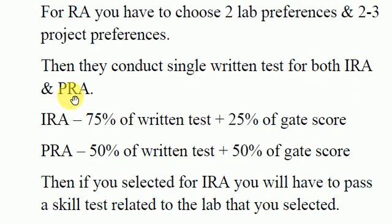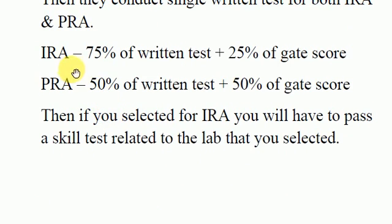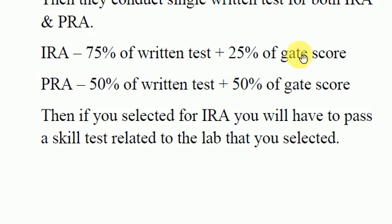They conduct a single written test common for both IRA and PRA. For IRA, the weightage is 75% written test and 25% GATE score. For PRA it is 50% written test and 50% GATE score.